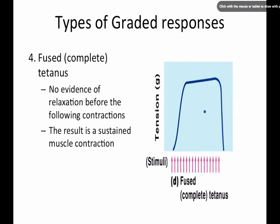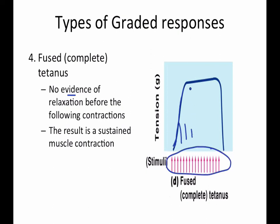The second type is fused tetanus or complete tetanus. Fused tetanus is when there is no evidence of relaxation before the following contractions occur — the muscle is sustained in that contraction. You continuously get each of these impulses with no relaxation in between. The unfused tetanus shows slight dips, while fused tetanus is the full sustained contraction.